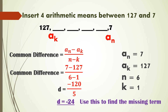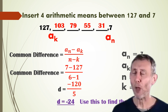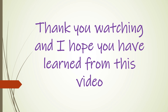Solving: (7 − 127) / (6 − 1) = −120 / 5 = −24. The common difference is −24. Adding −24 successively from 127: 127 + (−24) = 103, 103 + (−24) = 79, 79 + (−24) = 55, 55 + (−24) = 31. The four arithmetic means between 127 and 7 are 103, 79, 55, and 31. Thank you for watching and I hope you learned something from this video.